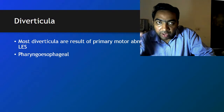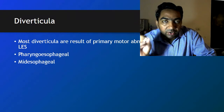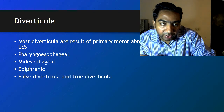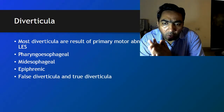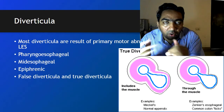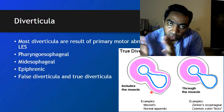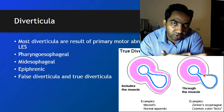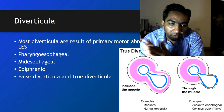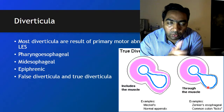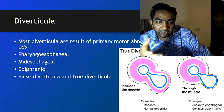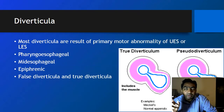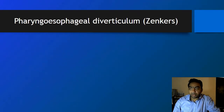Pharyngo-esophageal diverticula can be classified into pharyngo-esophageal diverticulum, mid-esophageal diverticulum, or epiphrenic diverticulum. There can be false diverticula and true diverticula. In a true diverticulum, all layers are included — the muscle, mucosa, and serosa. In a pseudo or false diverticulum, not all layers of the esophageal wall are present; only the mucosa comes out through the other layers. Zenker's diverticulum is an example of a pseudo diverticulum, while Meckel's diverticulum is an example of a true diverticulum.